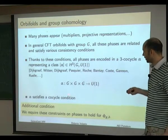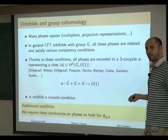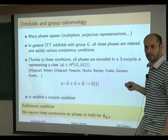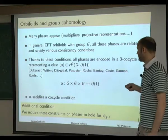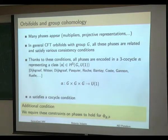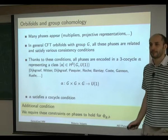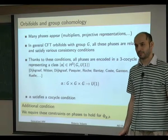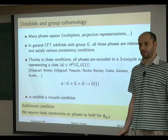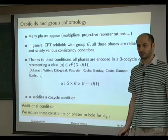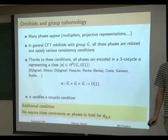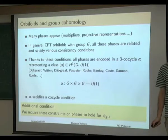We require that the twisted twining genera satisfy all these additional constraints from generic CFT orbifolds. Given alpha, one can define an auxiliary function C_G, and C_G(H_1, H_2) determines all the phases — the projective representation, all modular transformations, and behavior under conjugation. If one redefines the twisted twining genera by multiplying by phases depending on G and H, this corresponds to shifting alpha by a coboundary.